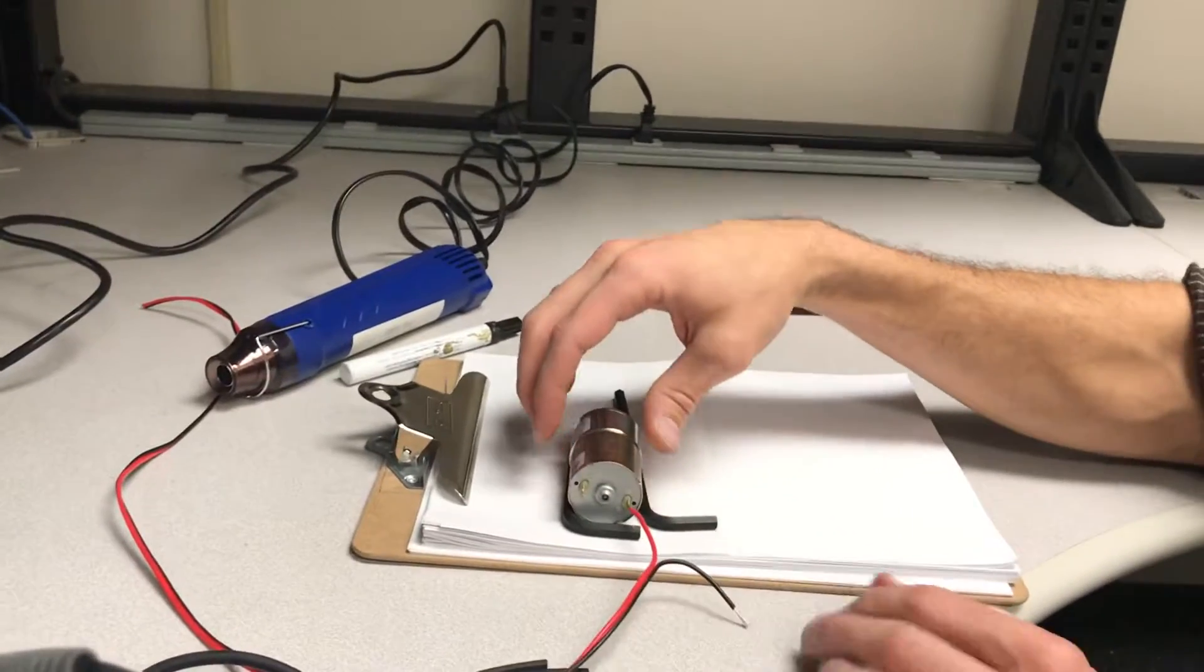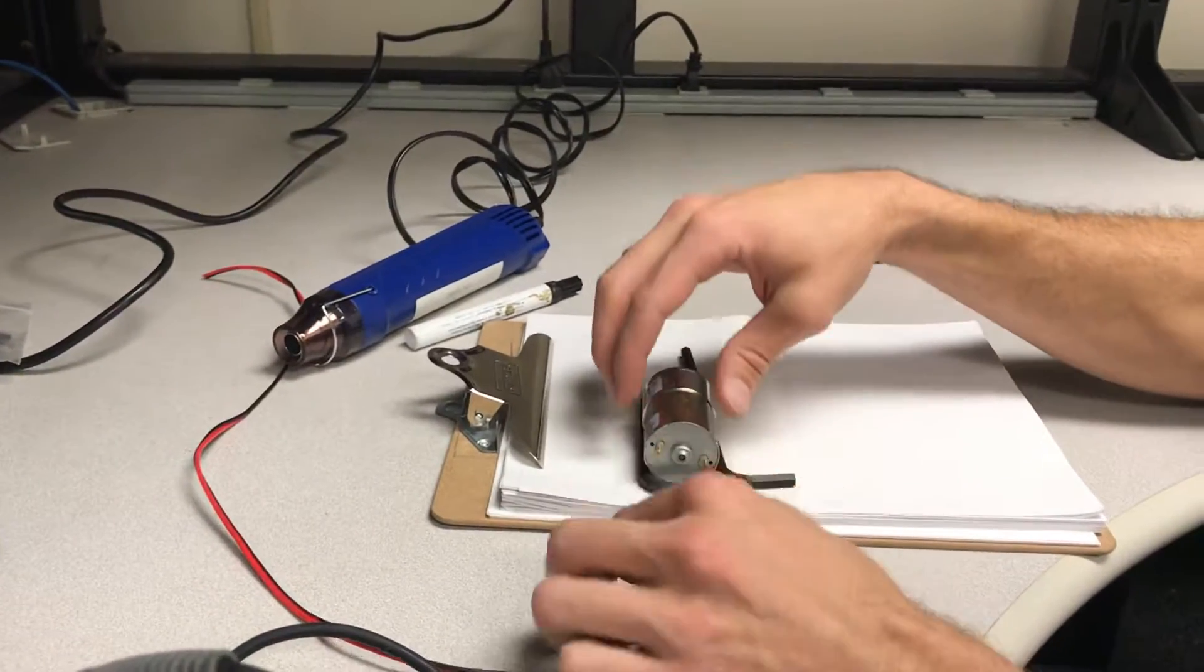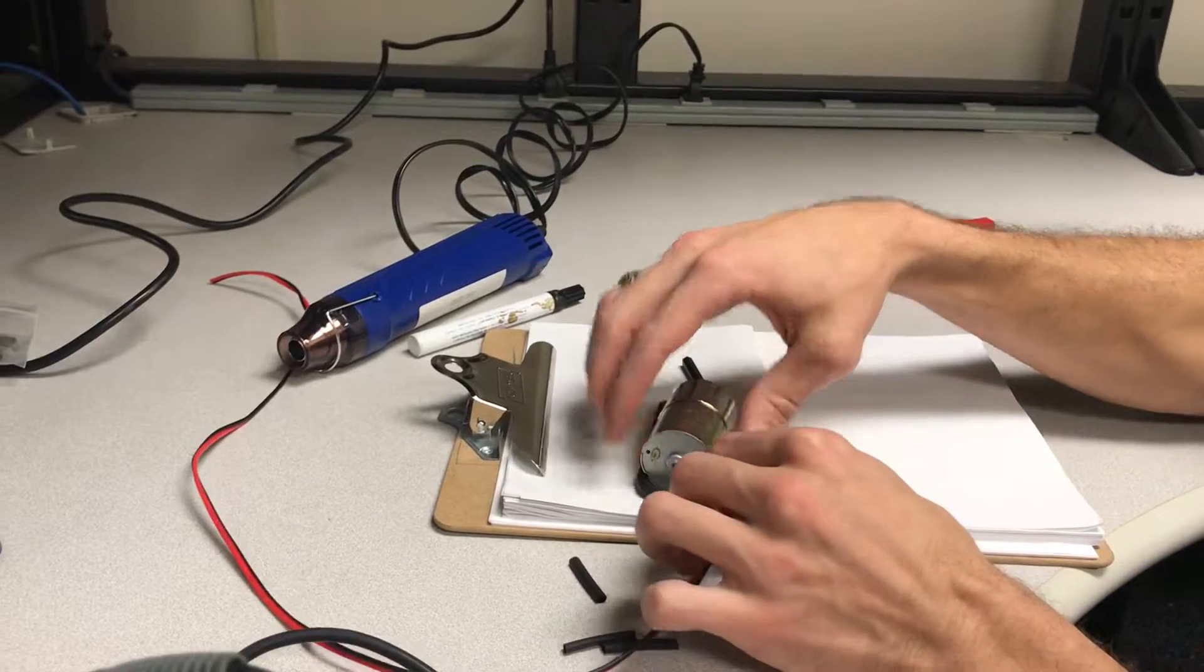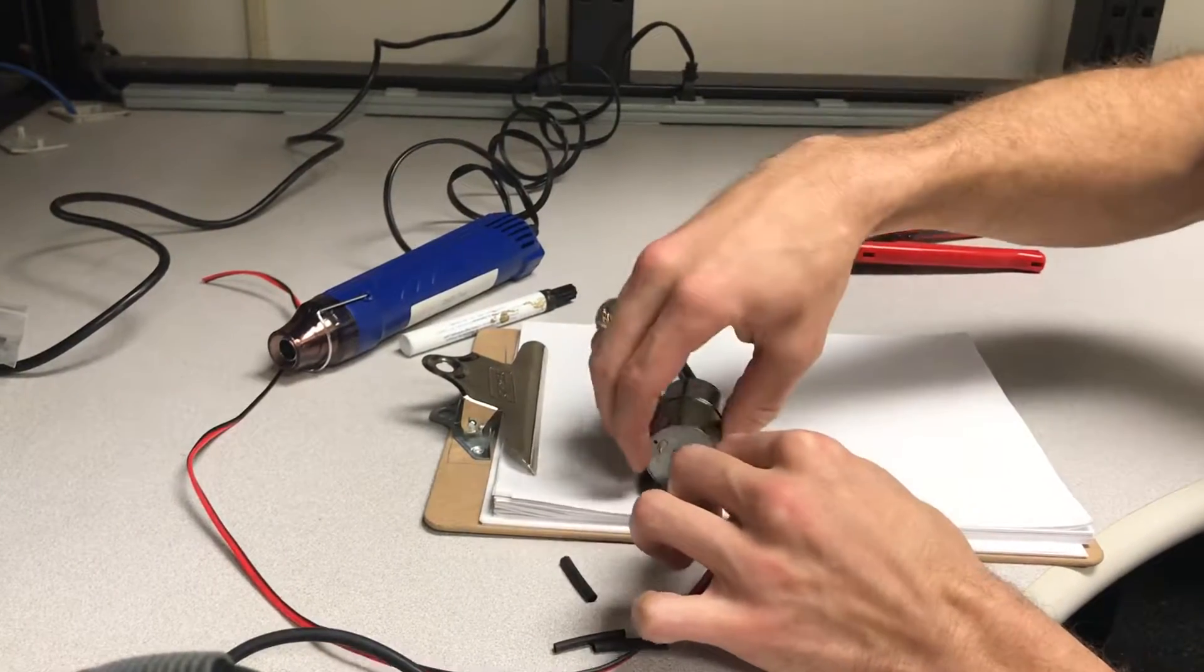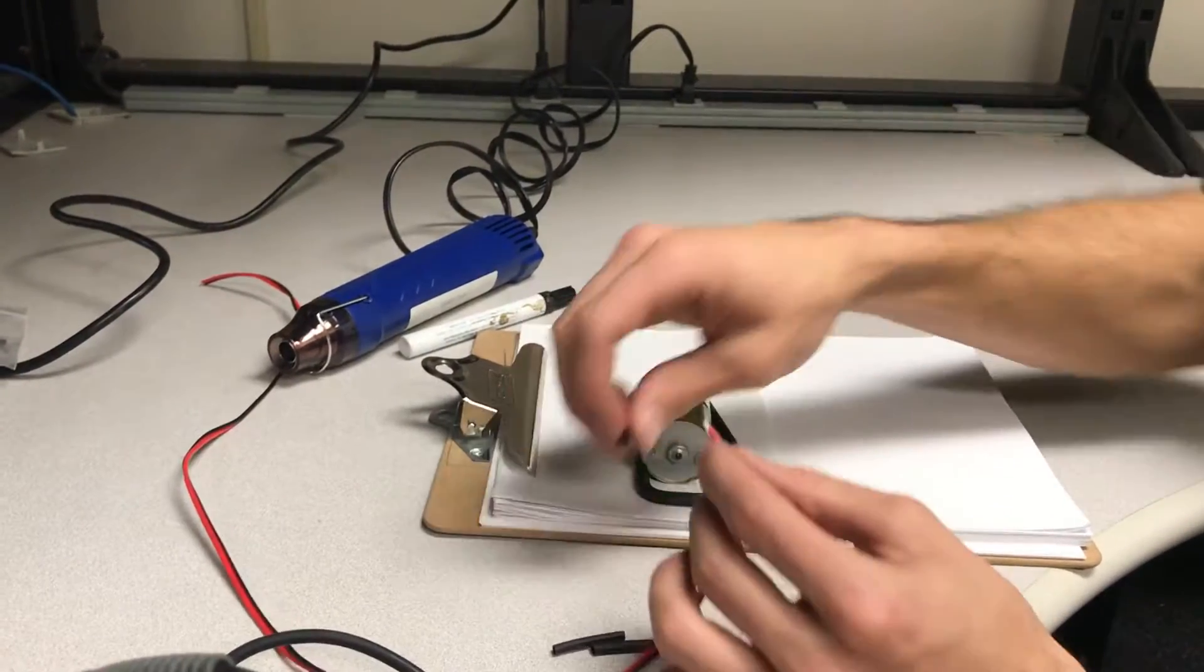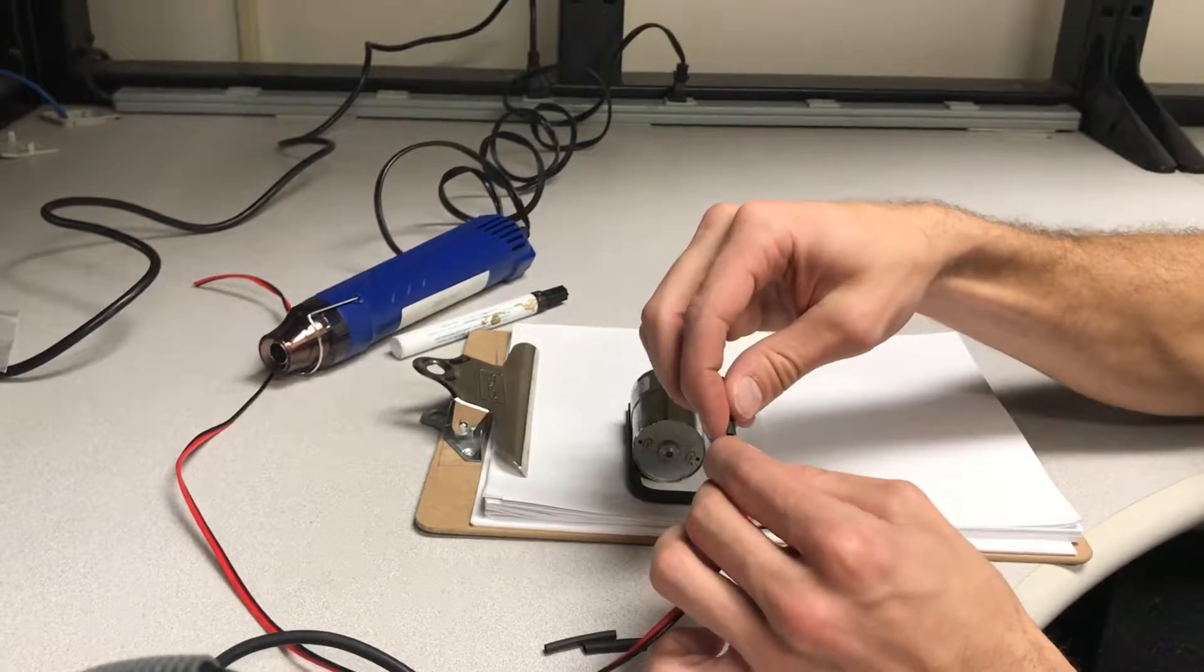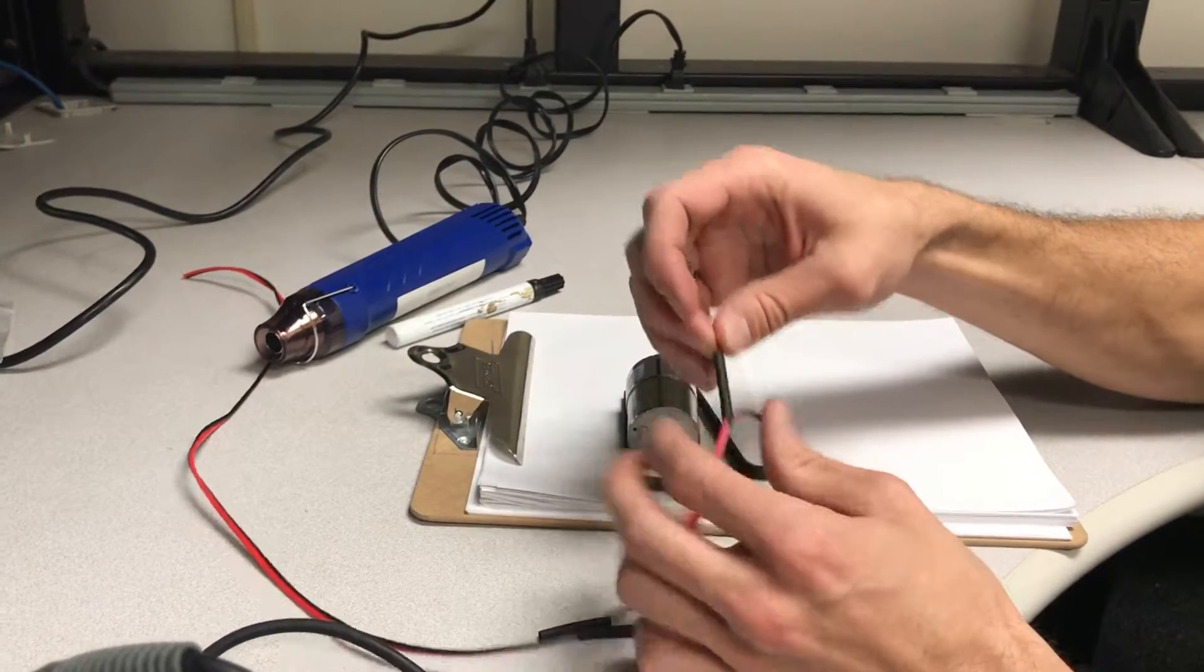This is the part where most people forget to put heat shrink on, so don't forget to put heat shrink on before you do any soldering. So rewind, put your heat shrink on your insulation.